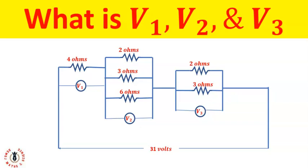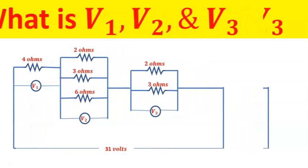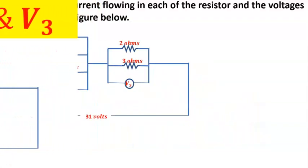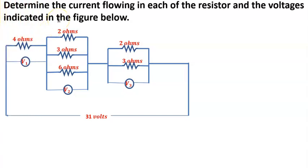Hi, welcome back to the channel. I saw this question and I feel it will help us understand how to treat resistors in series and in parallel better. The question says we should determine the current flowing in each of the resistors and the voltages indicated in the figure below.